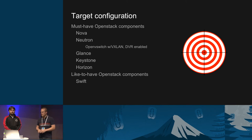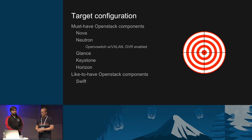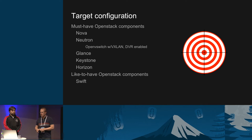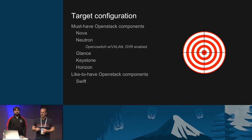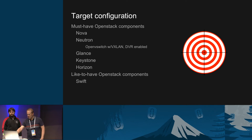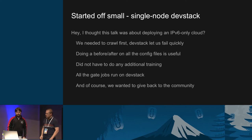For this work, we picked a target configuration that we tried to stick to. It basically had the normal OpenStack components: Nova, Neutron, Glance, Keystone, and Horizon. For Neutron, we chose OpenVSwitch with VXLAN because that's an extremely common configuration, and we also turned on DVR because that's a common configuration for most of our customers. Swift unfortunately dropped down to the like-to-have list — if there are any Swift people, I apologize — and I'll hand it over to Sean.